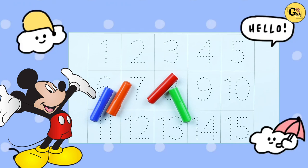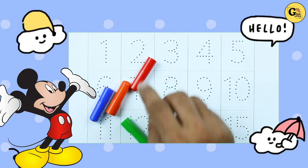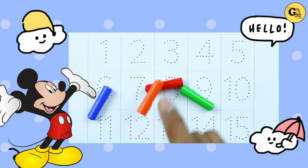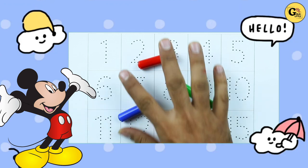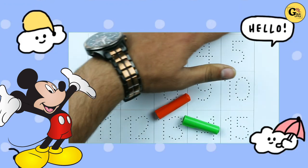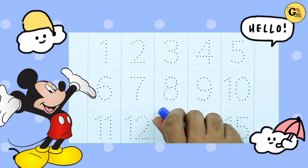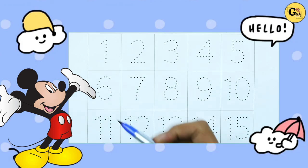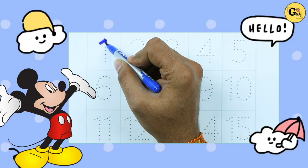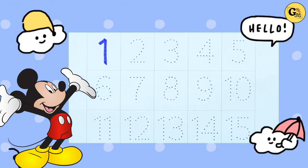Hello friends, today we will learn numbers 1 to 15 with some colors: green color, red color, orange color, blue color. Let's start. Numbers. Number 1. 1.